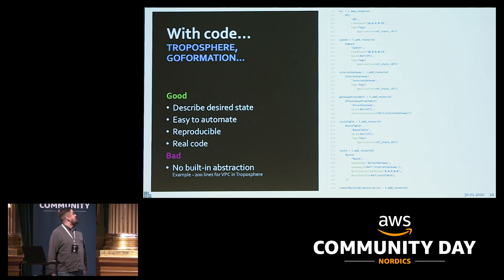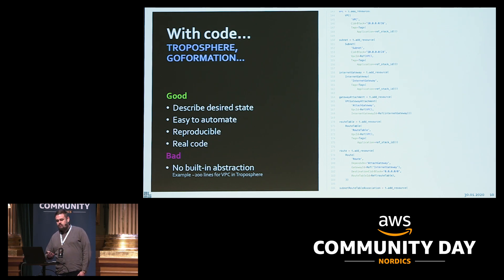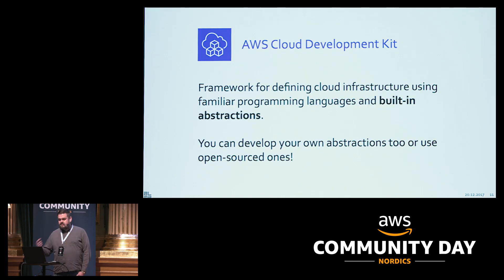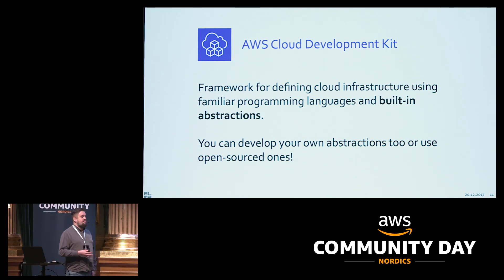There are tools like Troposphere and GoFormation which basically generate CloudFormation, and they give you some editor benefits like IntelliSense and auto-completions, but there's still no abstraction. So now we jump into CDK, where it might help. CDK is a framework for defining cloud infrastructure using familiar programming languages — that being one of the key points — and also with built-in abstractions. Besides the built-in abstractions, you can develop your own and also use open-sourced ones.